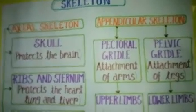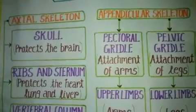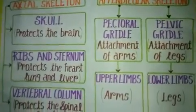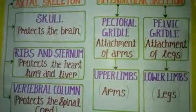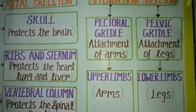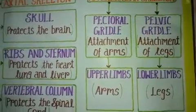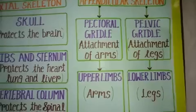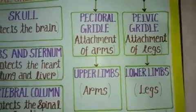Next are the skeletons present in the human body. The axial skeleton includes the skull, ribs, sternum, and vertebral column. The pectoral girdle has the shoulder bone attached. And the pelvic girdle is also included.